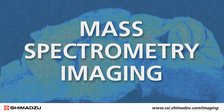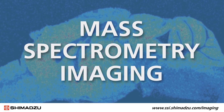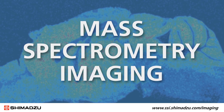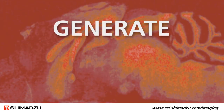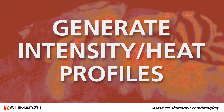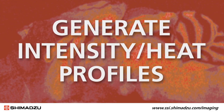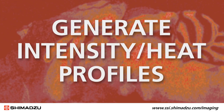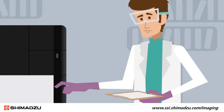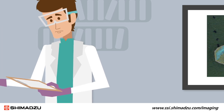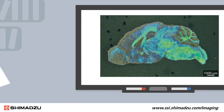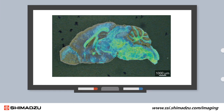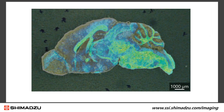Mass Spectrometry Imaging, MSI, is a field of mass spectrometry used to generate intensity heat profiles of specific molecules found in tissue. MSI allows you to visualize microscopic images of a sample and see compound distribution information in specific regions of the sample.